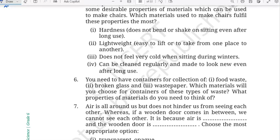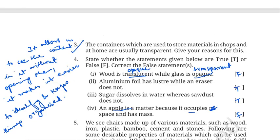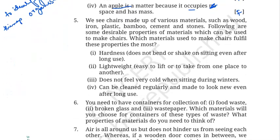Number five looks at materials used to make chairs: wood, iron, plastic, bamboo, cement, and stones. For hardness, you can use cement or iron — both are very hard and will not bend even if you sit on them for a long time. For a lightweight chair that is easier to lift, you can use plastic, bamboo, or wood.